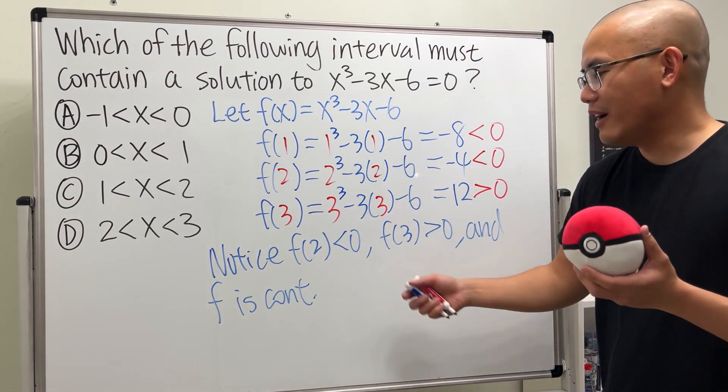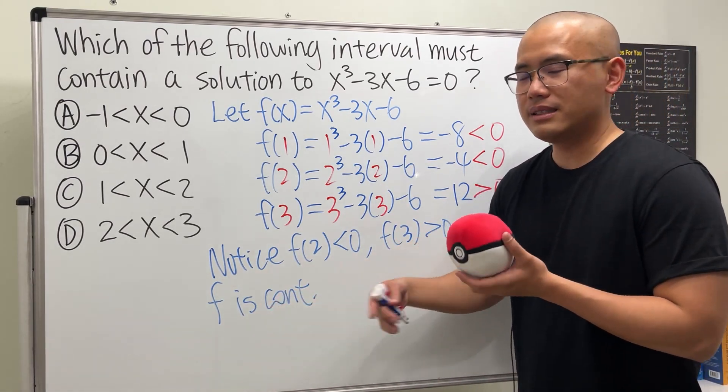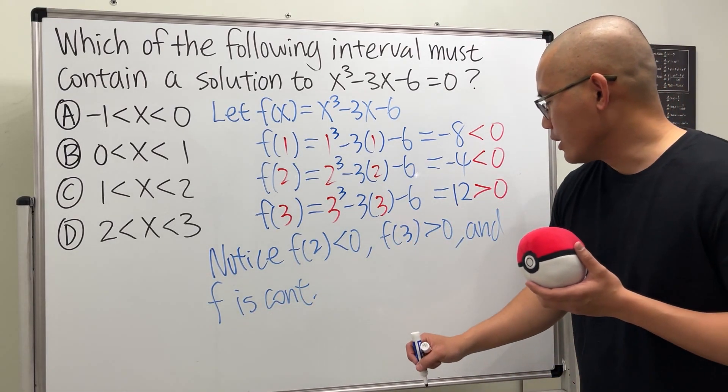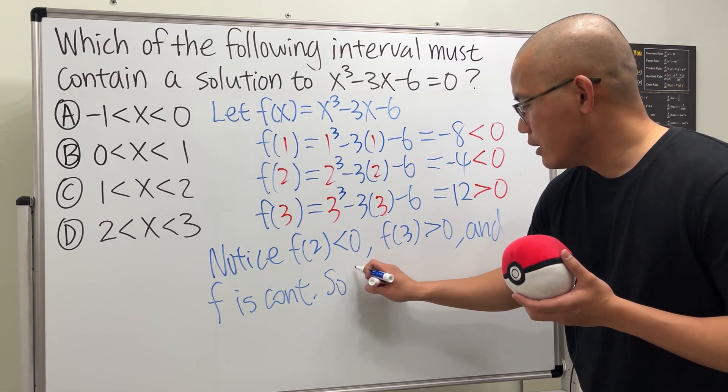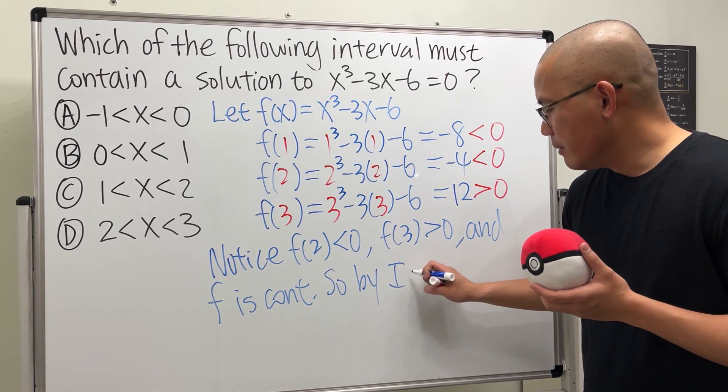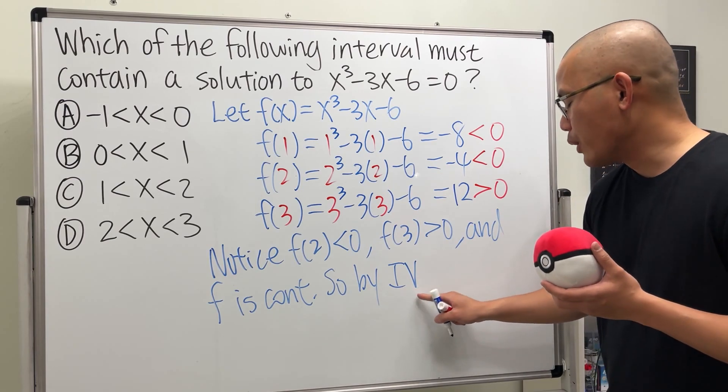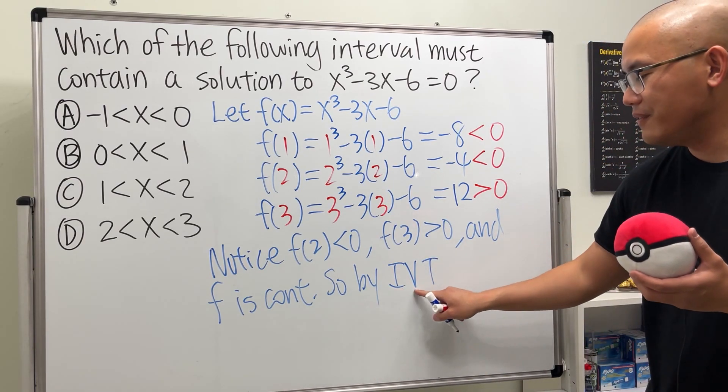f is continuous everywhere. Well, you can say everywhere, but I think f is continuous implies f is continuous everywhere. So that's good. And we can just say, so by the intermediate value theorem, like IVT.